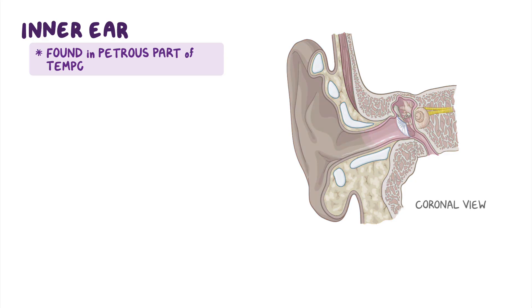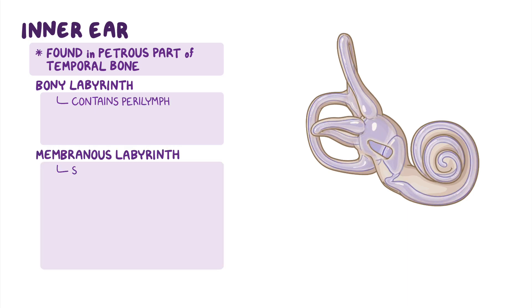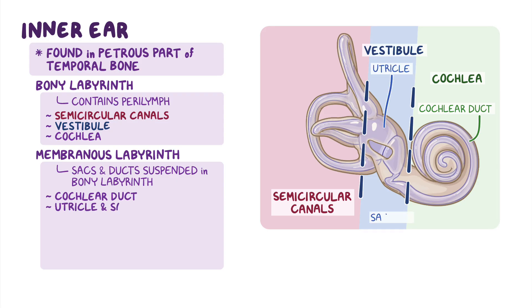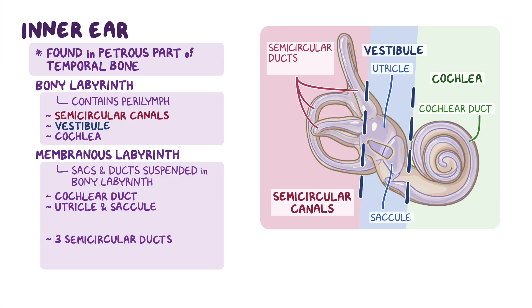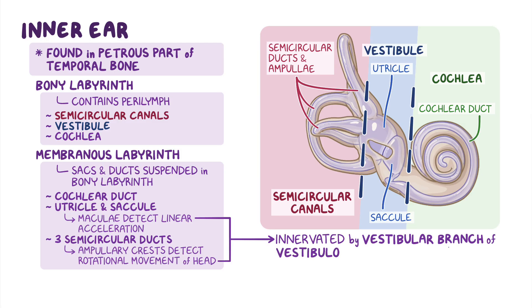As a quick recap: the inner ear is found in the petrous part of the temporal bone, and is made of the bony labyrinth — which contains cavities filled with perilymph — and the membranous labyrinth, which is made of sacs and ducts suspended in the bony labyrinth. The parts of the bony labyrinth are the semicircular canals, the vestibule, and the cochlea. The membranous labyrinth is organized into the cochlear duct, the utricle and saccule, and the three semicircular ducts. Both the utricle and saccule contain areas of sensory epithelium called the maculae, which detect linear acceleration. Each ampulla of a semicircular duct contains an area of sensory epithelium called the ampullary crest and detects rotational movements of the head. Both of these are innervated by the vestibular branch of the vestibulocochlear nerve.